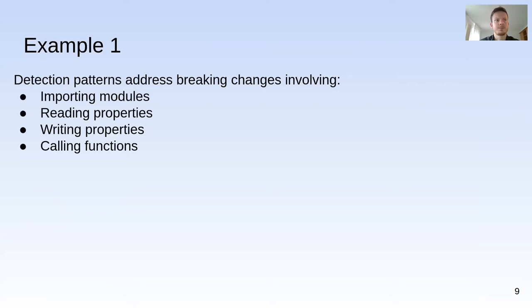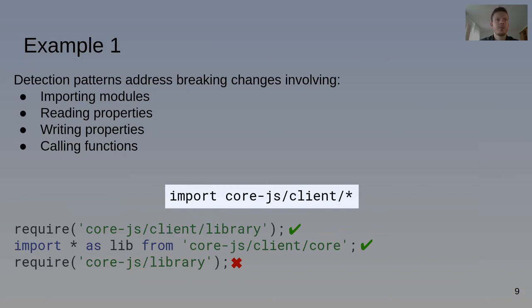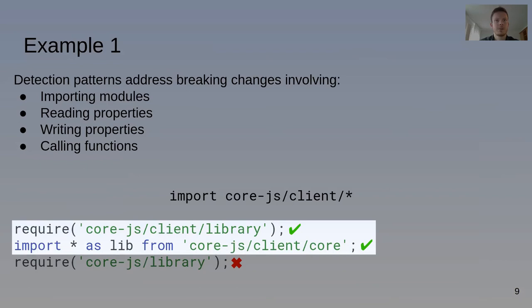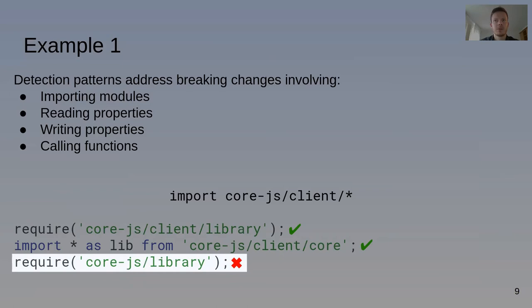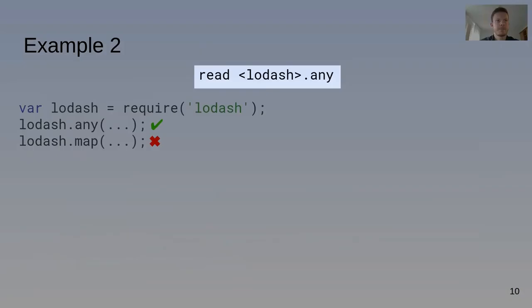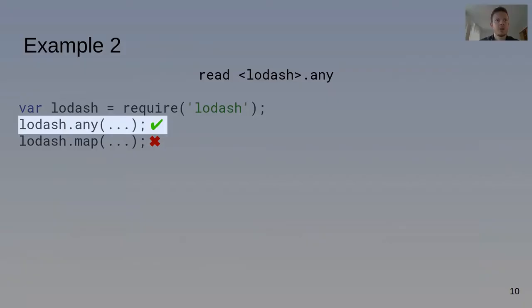Consider this import pattern. It matches imports of all modules in the client folder of the Node.js library core.js — for example, the library and core modules within client. This read pattern matches a read of a property named 'any' on the lodash module object. It will match the first example, but for the second example, the read is also on the lodash module but the property is 'map', so the pattern does not match.